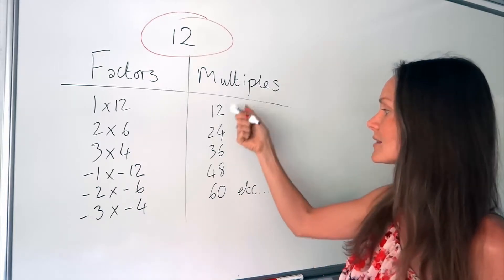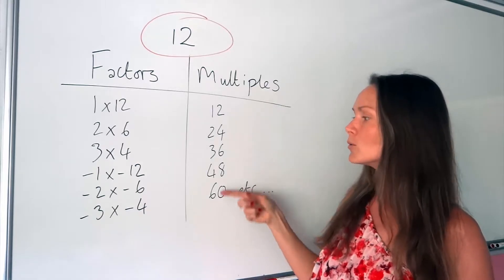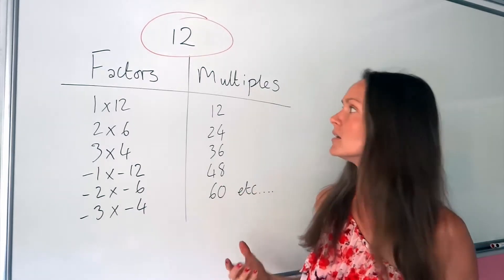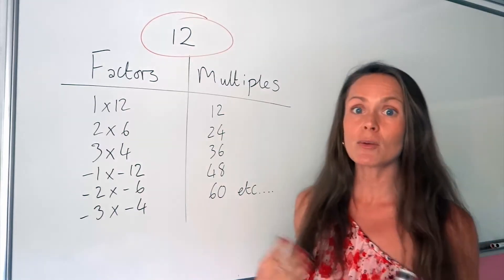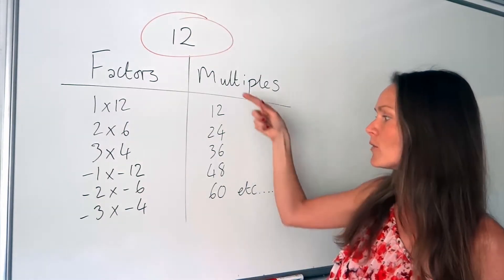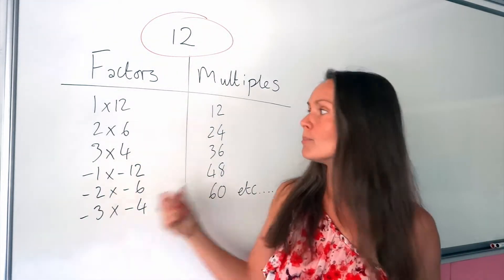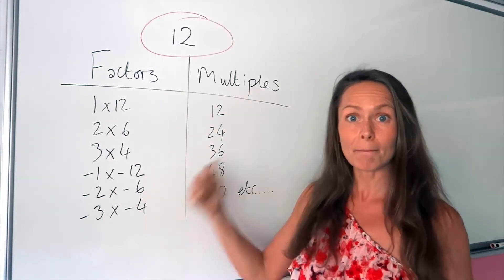So you can see, they keep going. There will be an infinite number of multiples in the 12 times table. So just remember, for multiples you have to multiply. So all the numbers when you multiply 12, they're the multiples. So factors are going to be smaller, but multiples are going to be bigger.